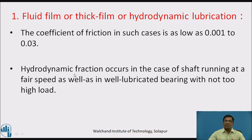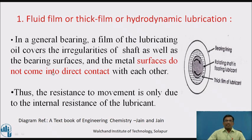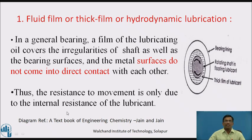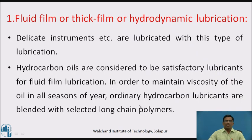Hydrodynamic friction occurs in the case of a shaft running at fair speed, as well as in well-lubricated bearings with not too high a load. In general bearings, a film of lubricating oil covers the irregularities of the shaft as well as the bearing surfaces, and the metal surfaces do not come into direct contact with each other. This diagram shows a central shaft with bearings, and the lubricant introduced between them is so thick that there is no contact between the shaft and the bearings. Thus, the resistance to movement is only due to the internal resistance of the lubricant. Delicate instruments are lubricated with this type of lubrication.